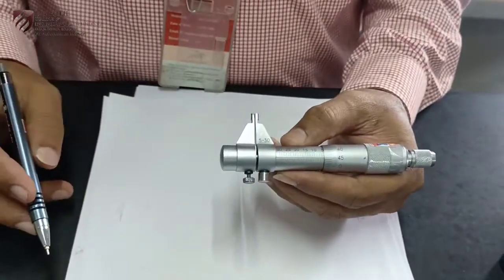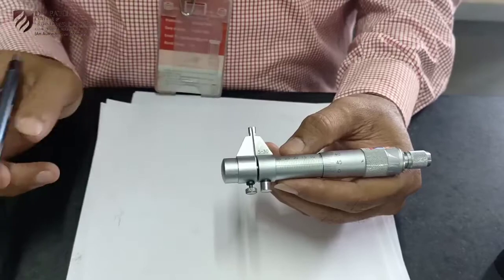This is the second type of micrometer that we are supposed to use, known as an inside micrometer.